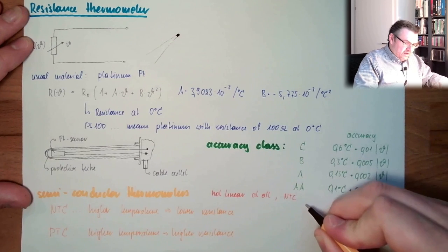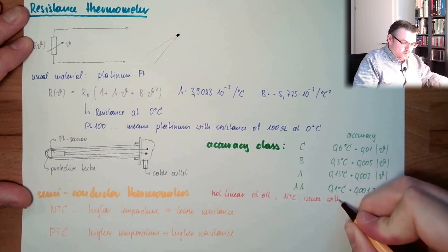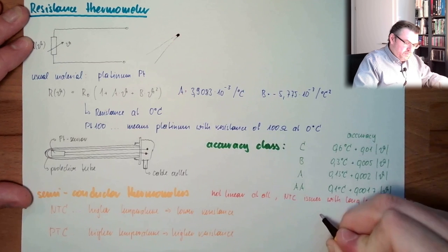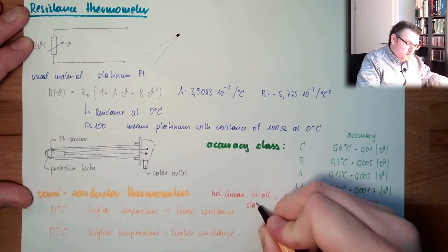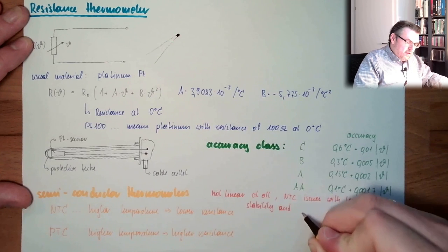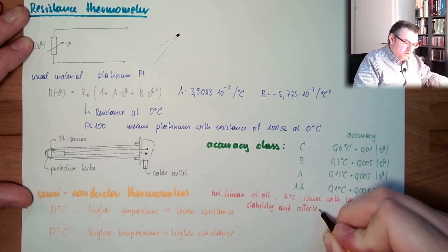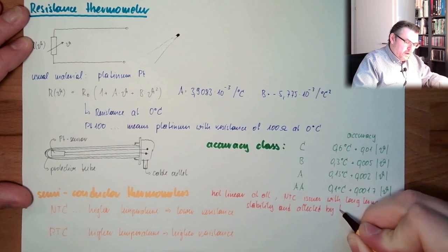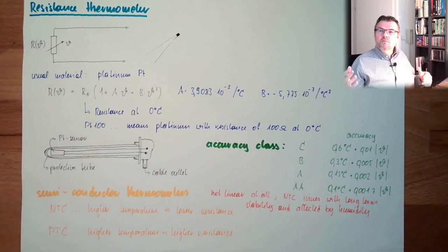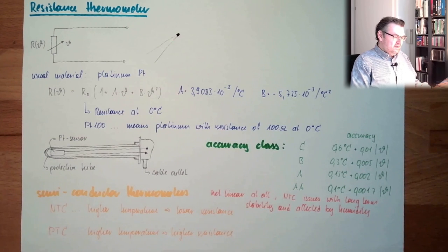NTCs, for instance, have issues with long term stability. And affected by humidity. So, the humidity is also affecting the resistance of these NTCs.